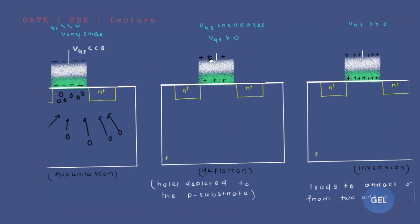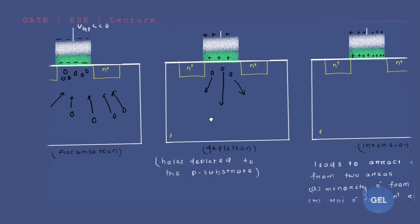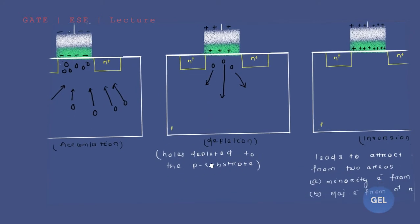When we give a little positive VGS, the holes that are present here will all run away — because they get repelled. They start to repel. This is called depletion. Holes get depleted to the P-region. Holes get depleted to the P-substrate.